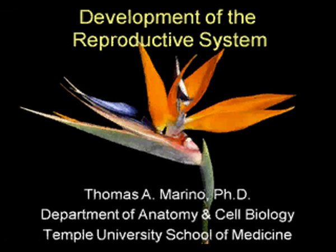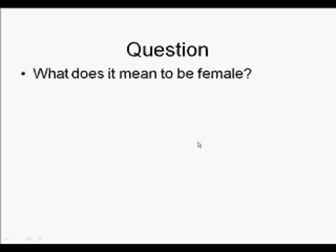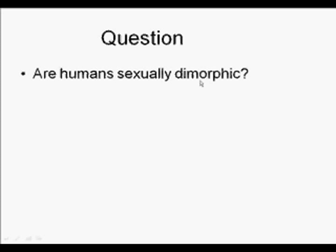This lecture will cover the development of the reproductive system. When we begin, we want to think about three questions. First, what does it mean to be female? Second, what does it mean to be male? And perhaps the most difficult question: are humans sexually dimorphic? It's an interesting question that's been raised more and more over the last 30 years — are there really just males and females, or are there intermediaries?